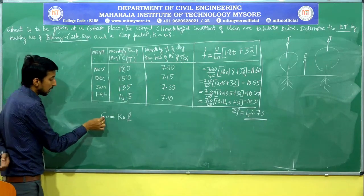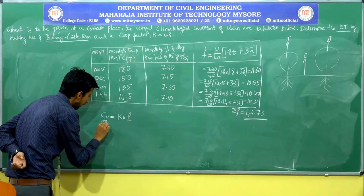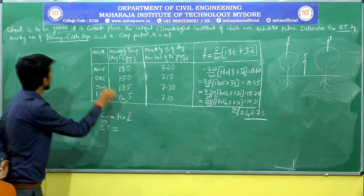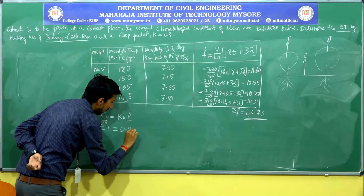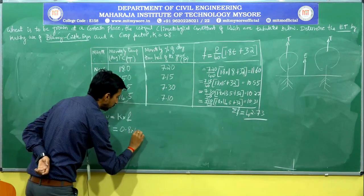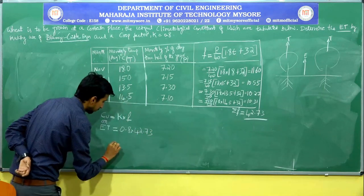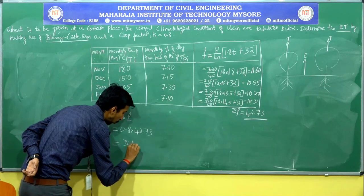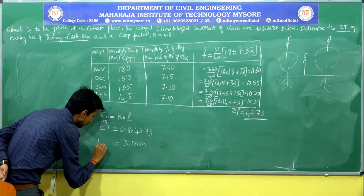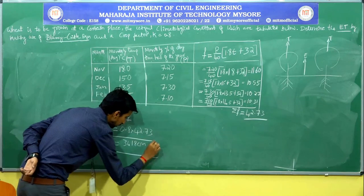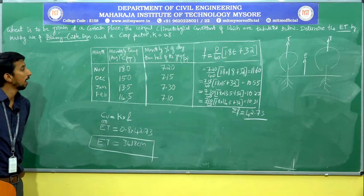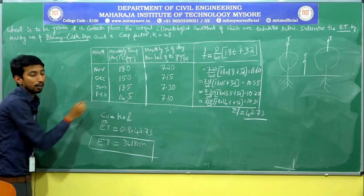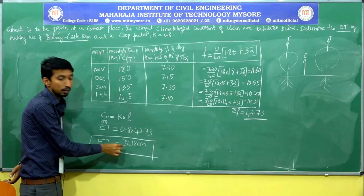Now we find CU — the consumptive use or evapotranspiration — as K × ΣF = 0.8 × 42.73 = 34.18 cm. This is the average consumptive use for the four months from November to February. Approximately 34.18 cm of evapotranspiration occurred during this period.